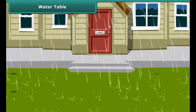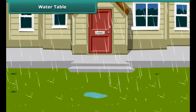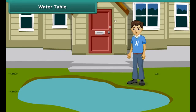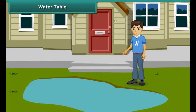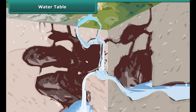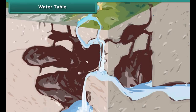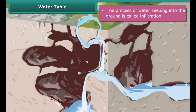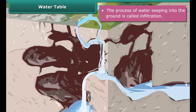After heavy showers, huge puddles form in your locality. A few hours later the puddles are nowhere to be seen — where has all the water disappeared? It has seeped into the ground. This process of water seeping into the ground is called infiltration. Groundwater gets recharged by this process.